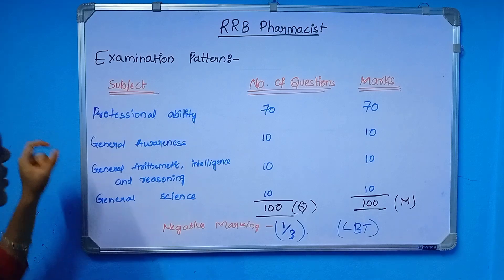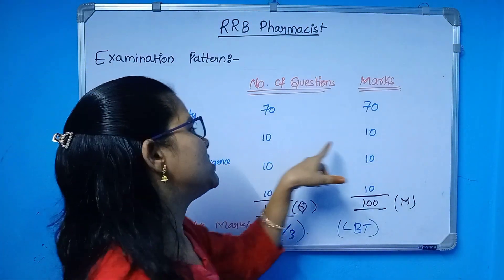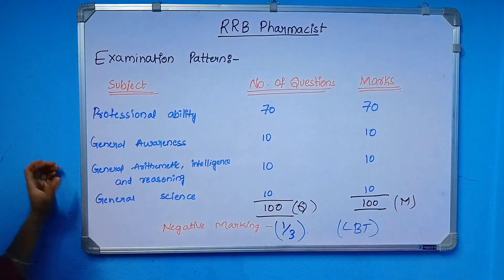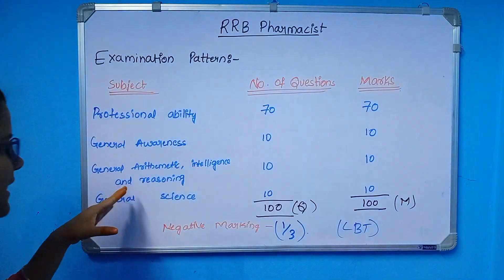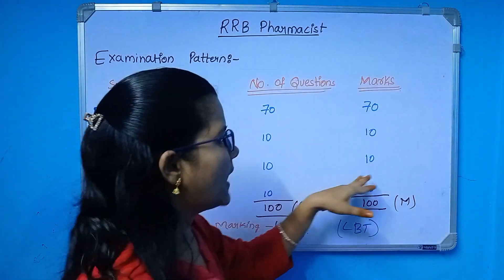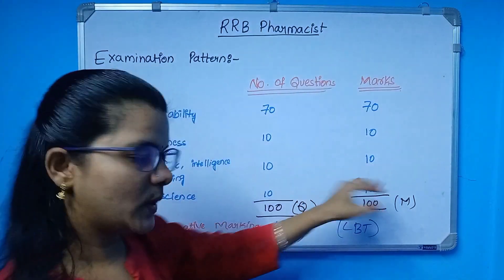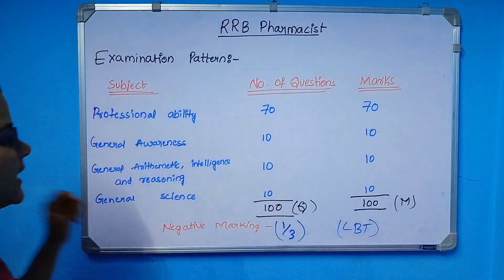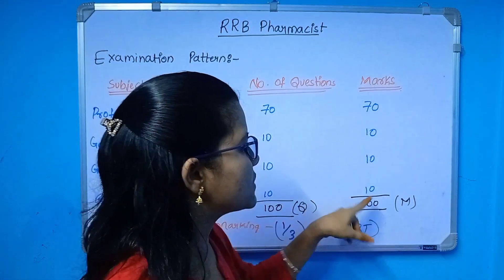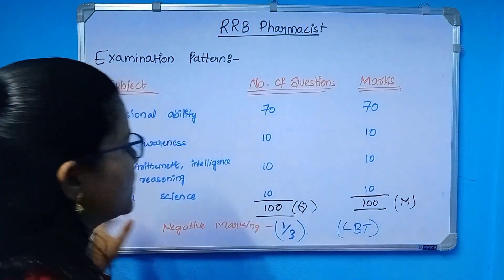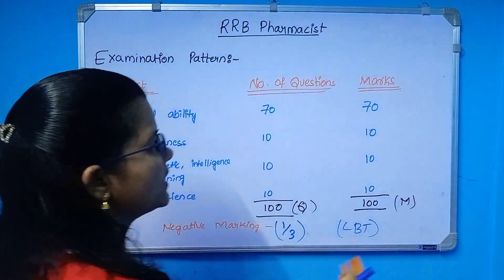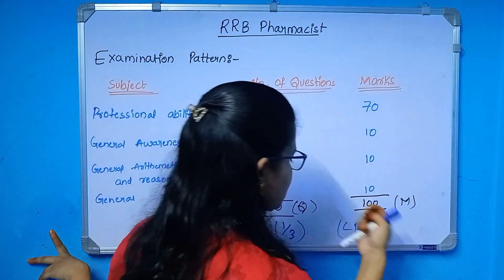For General Awareness, there are 10 questions and 10 marks. For General Intelligence and Reasoning, the number of questions is 10 and marks is 10. For General Science, the number of questions is 10 marks. The total is 100 questions and 100 marks.